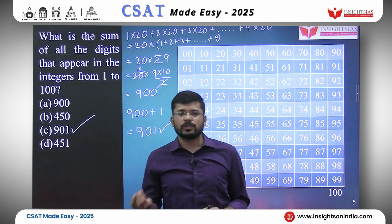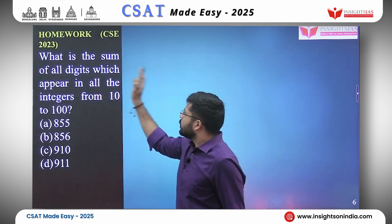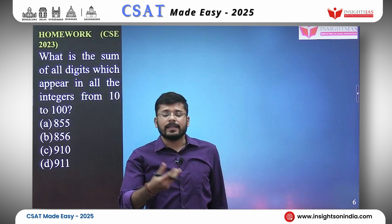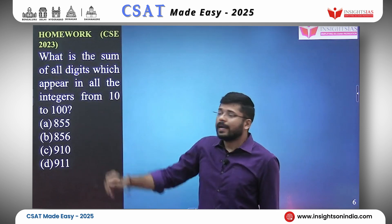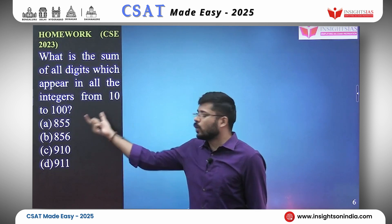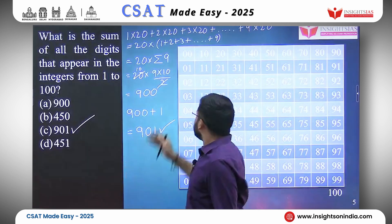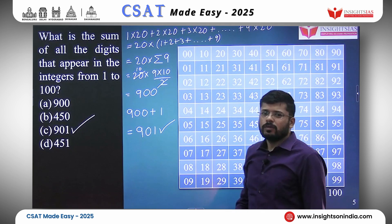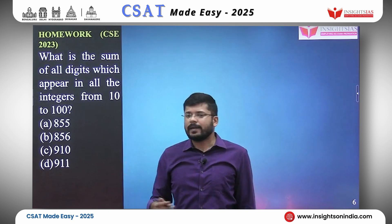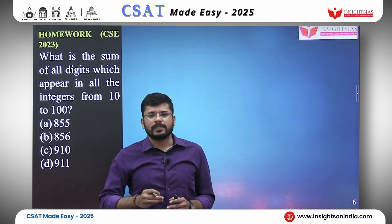Based on this, a question was asked in the 2023 UPSC paper — that is your homework question. What is the sum of all digits which appear in all the integers from 10 to 100? We calculated it from 1 to 100; now do it from 10 to 100. Calculate how many times each digit occurs between 10 and 100. In the table, just leave out the units-place column for 1 to 9, then work from 10 to 99 and don't forget to add the digit 1 from 100. Leave your answers in the comment section.